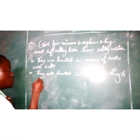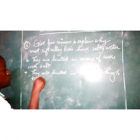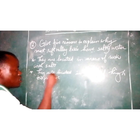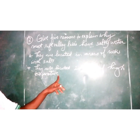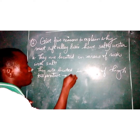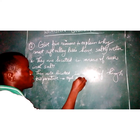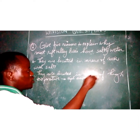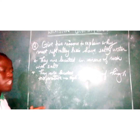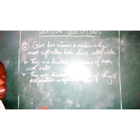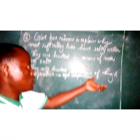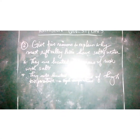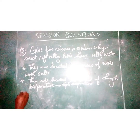Point number two: they are located in areas of high temperature. This high temperature results in high evaporation, and when we have high evaporation, this results in accumulation of salts — thus we have salty water in the rift valley lakes.